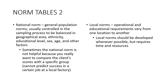A national norm is a general population norm usually controlled in the sampling process to be balanced in geographical area, ethnicity, educational level, sex, age, and other factors. However, national norms are not always helpful — you may want to compare a client to a specific local group rather than all of America. For example, someone from a small town in Kansas is very different from someone in Los Angeles or New York State.